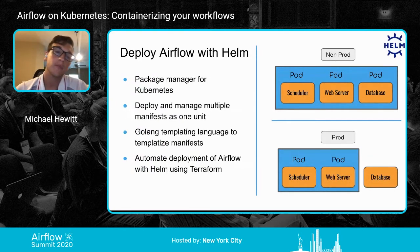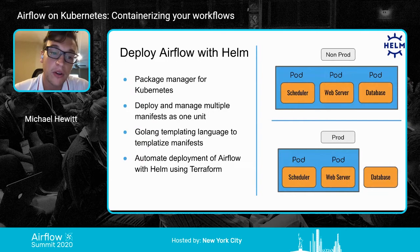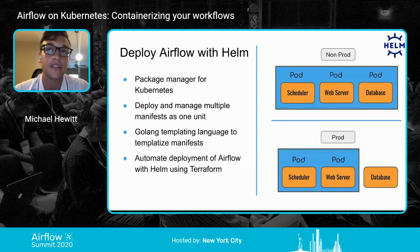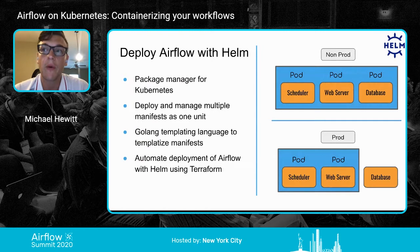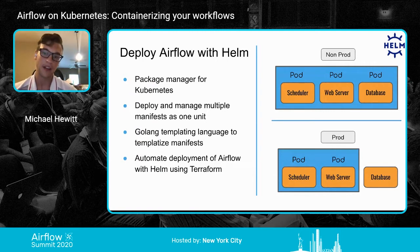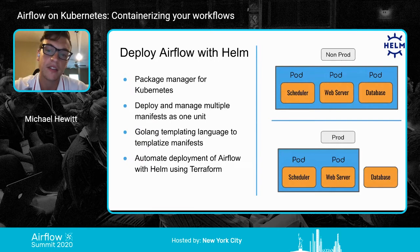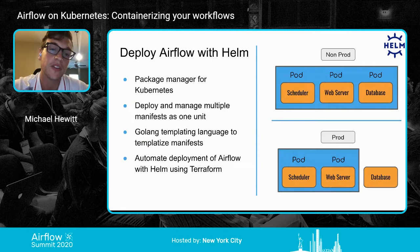Deploying Airflow on Kubernetes — we actually deploy Airflow on Kubernetes with Helm. Helm is a package manager for Kubernetes. It can deploy and manage multiple manifests as one unit. A manifest is essentially a YAML file that contains declarative configuration for the Kubernetes resource you want to create. If you have a big deployment like Airflow — with the scheduler, web server, and database — there's no point in deploying one at a time because it won't function as a system unless all the components are deployed. Helm enables you to do that and manage those manifests and Kubernetes resources as one unit.